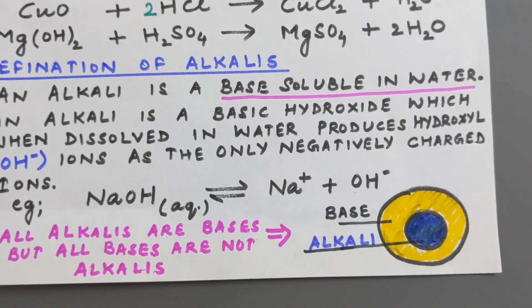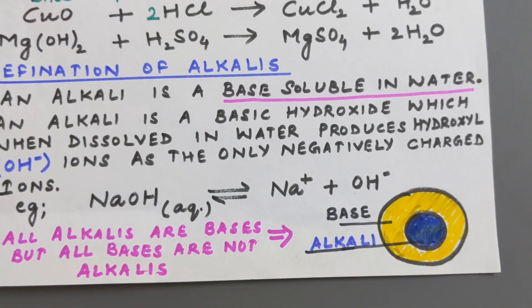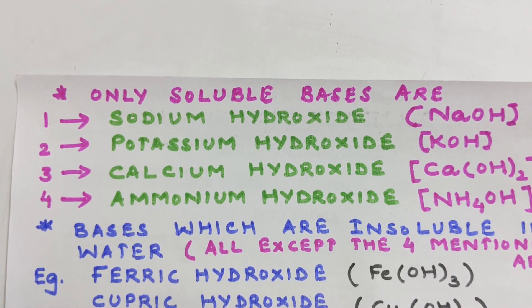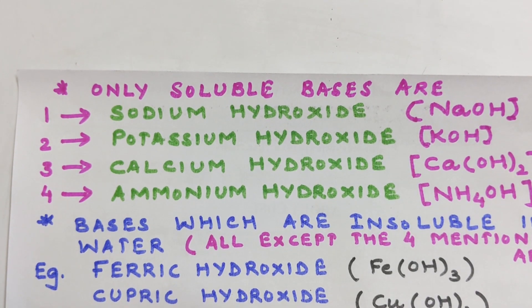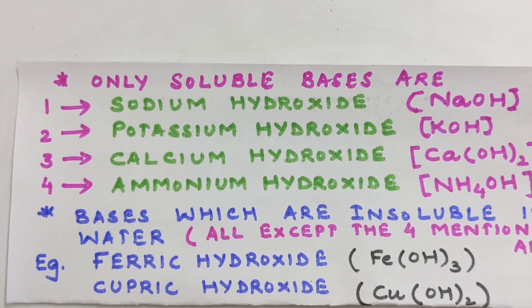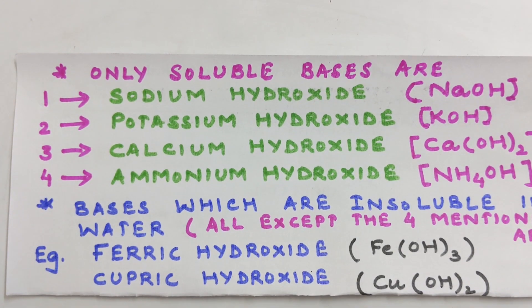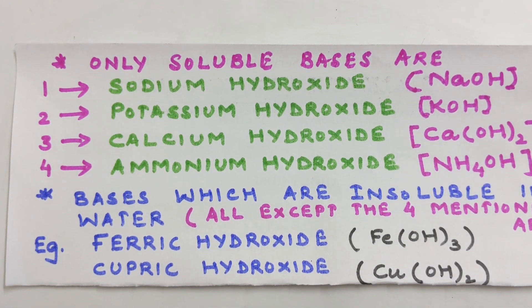So let us do examples of those bases which are soluble in water. Now please remember these are the only four water-soluble bases: sodium hydroxide, potassium hydroxide, calcium hydroxide, and ammonium hydroxide. These are the only water-soluble bases which are also known as alkalis.